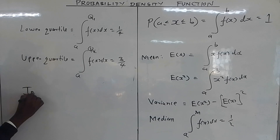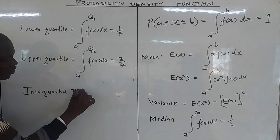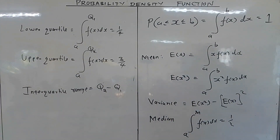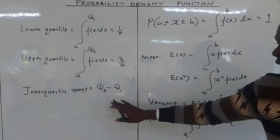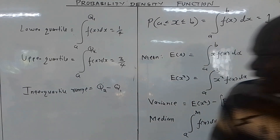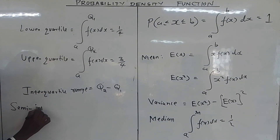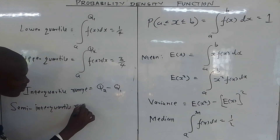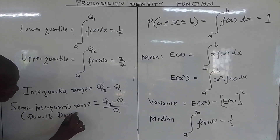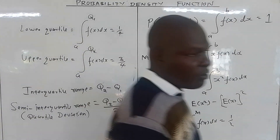So the interquartile range is the upper quartile minus the lower quartile. From the interquartile range you get the semi-interquartile range — semi means half of the interquartile range. So the semi-interquartile range is the upper quartile minus the lower quartile divided by two. The semi-interquartile range is sometimes referred to as the quartile deviation.